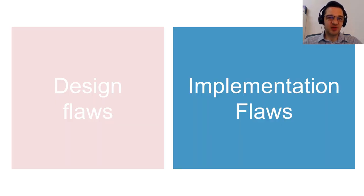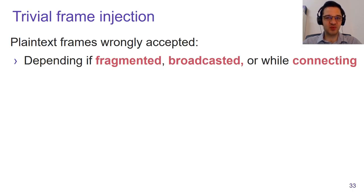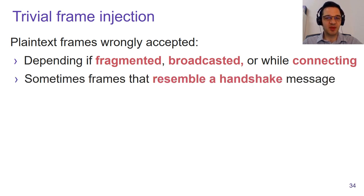Apart from these design flaws, I also discovered various widespread implementation flaws. The first set can be abused to very easily inject frames into a protected Wi-Fi network. An adversary can often inject a plaintext Wi-Fi frame by carefully constructing it. For example, sometimes an implementation wrongly accepts a plaintext frame if it is fragmented, or if it has a broadcast receiver address, or it wrongly accepts plaintext frames while the client is still connecting to the network. Additionally, sometimes a plaintext frame is accepted when it resembles a handshake message.